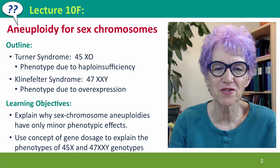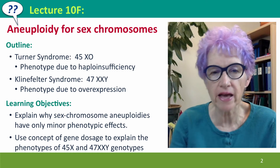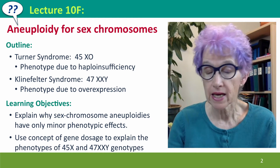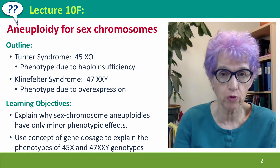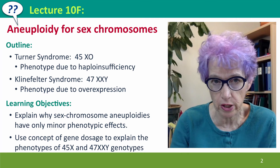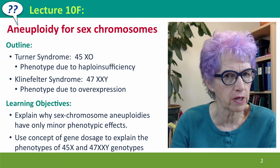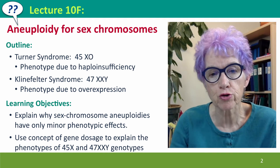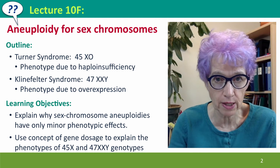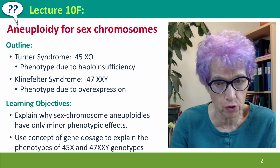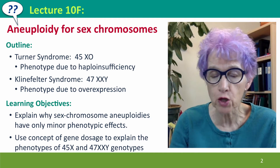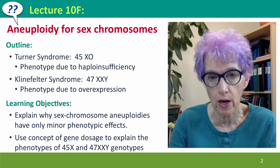Hi, everyone. Welcome back to Useful Genetics. This is lecture 10F, where we're going to continue our consideration of aneuploidies and of sex chromosome aneuploidies in particular, thinking about the phenotypes associated with these aneuploidies and the causes of the phenotypes. We'll talk about Turner syndrome, which is women who have only one X chromosome instead of the usual two, and we'll talk about Klinefelter syndrome, which is men who have two X chromosomes instead of the normal one.